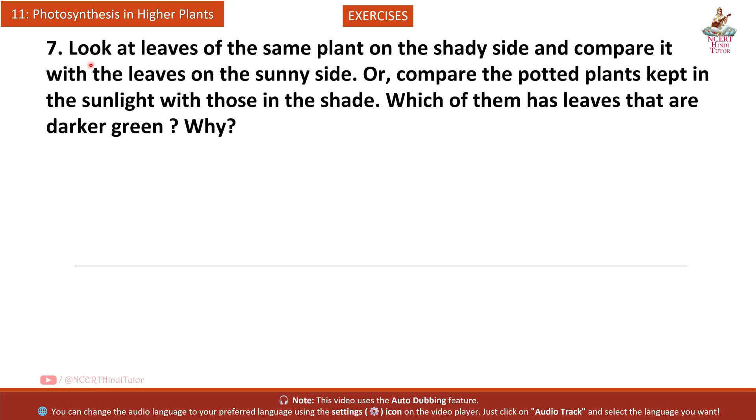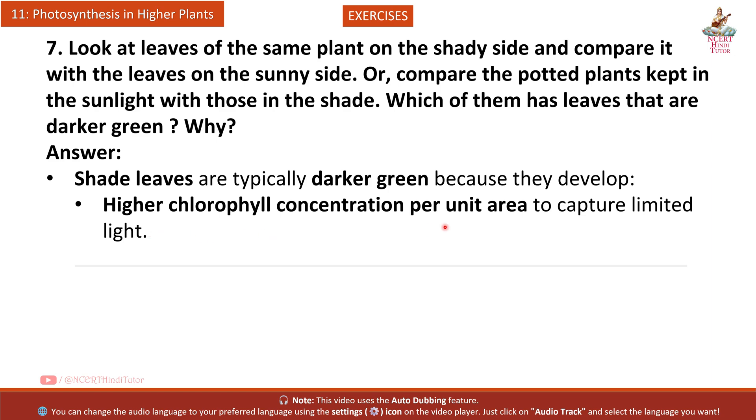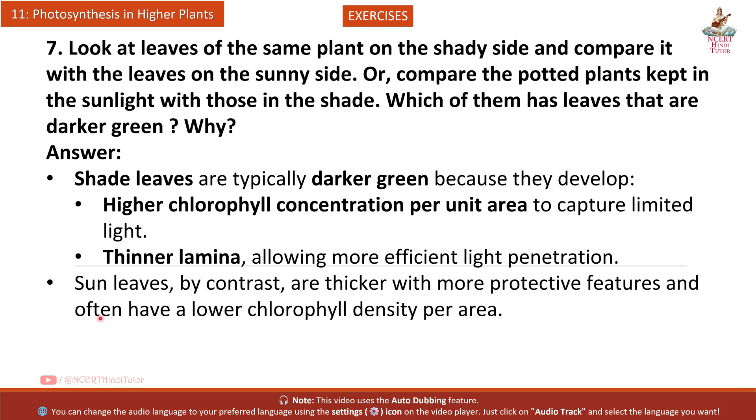Answer: Chlorophylls degrade rapidly in darkness with no light-driven renewal, causing the green to fade. Carotenoids and xanthophylls are more stable, remaining in tissues longer and imparting a yellow-orange hue when chlorophyll is lost. Question 7: Look at leaves of the same plant on the shady side and compare with leaves on the sunny side, or compare potted plants kept in sunlight with those in shade. Which has leaves that are darker green?